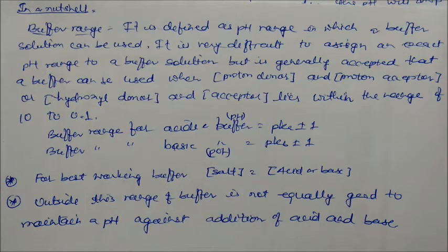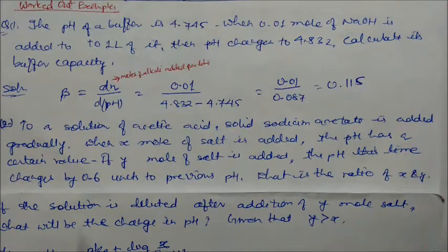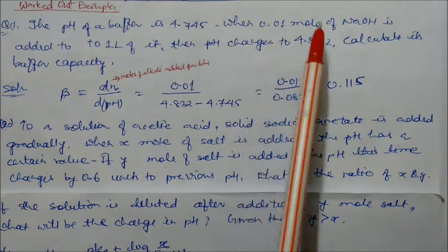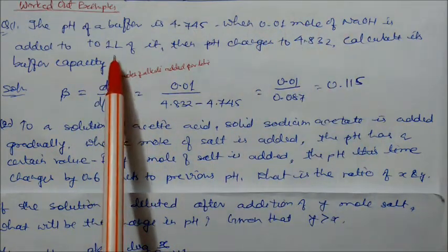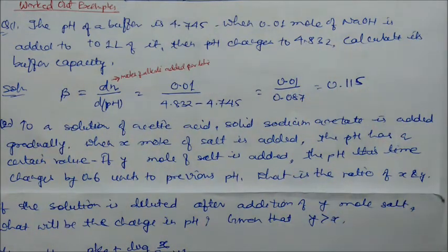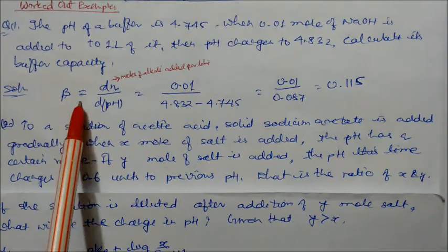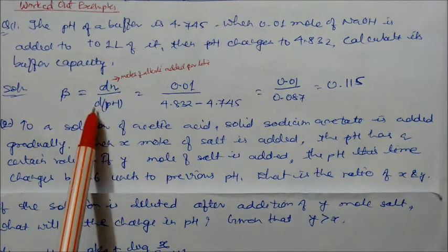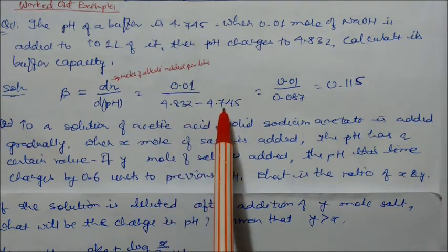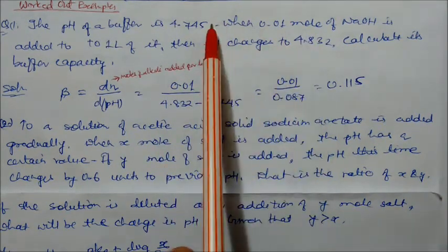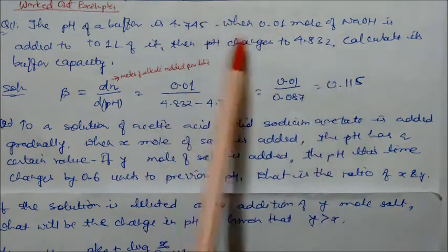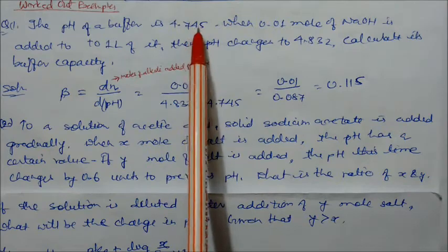Worked example 1: The pH of a buffer is 4.745. When 0.01 mole of sodium hydroxide is added to one liter of it, the pH changes to 4.832. Calculate the buffer capacity. Buffer capacity beta equals moles change divided by change in pH, so beta equals 0.01 divided by (4.832 minus 4.745), giving the buffer capacity of this solution.